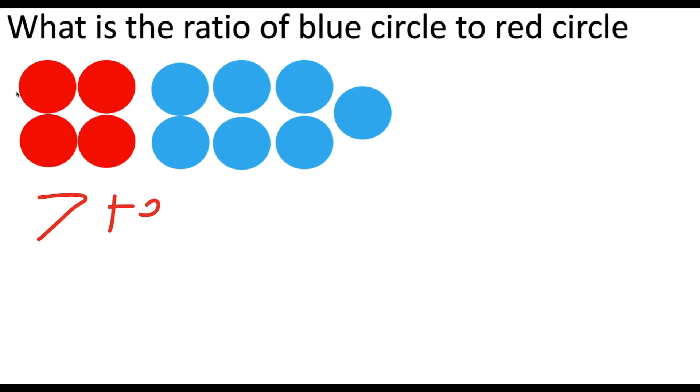Now it's saying how many red circles? One, two, three, four. So seven to four is one way of writing the answer.